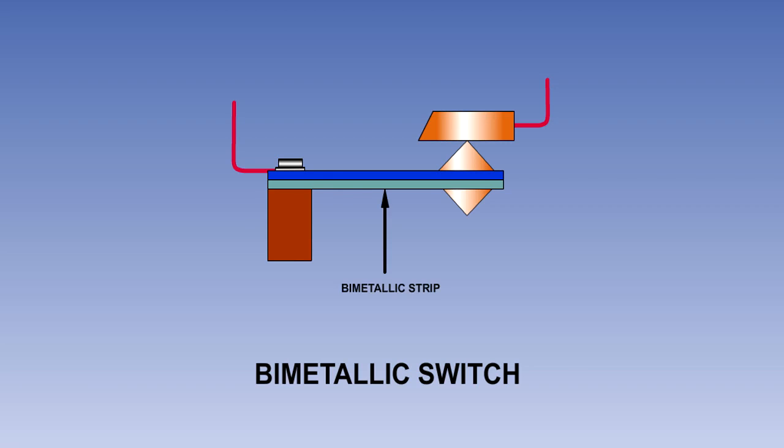The switch consists of a bimetallic strip made up of two strips of dissimilar metals bonded together. The strip is fixed at one end, with the other end free to move up and down. The free end has an electrical contact on it. At normal temperatures, the strip is straight. In our example shown here, when the strip is straight, its contact is touching a fixed contact.